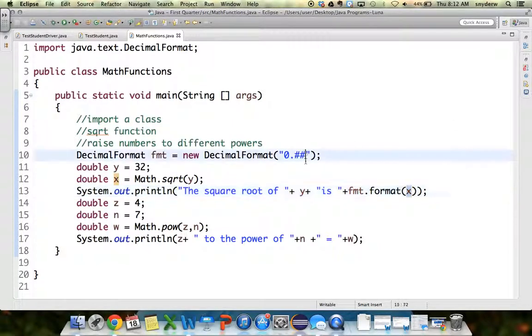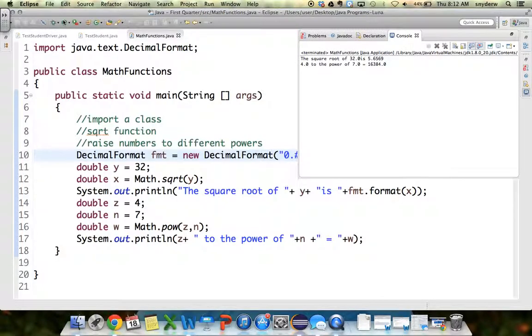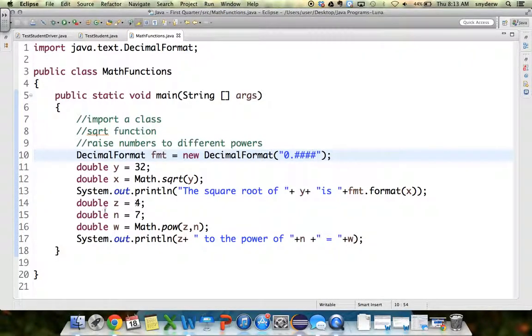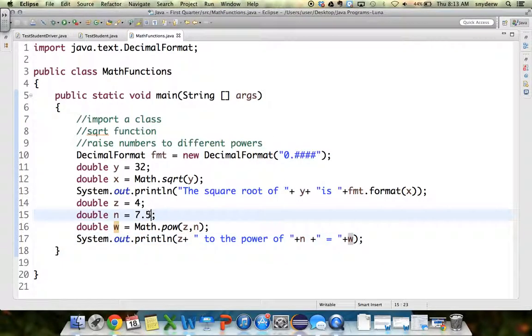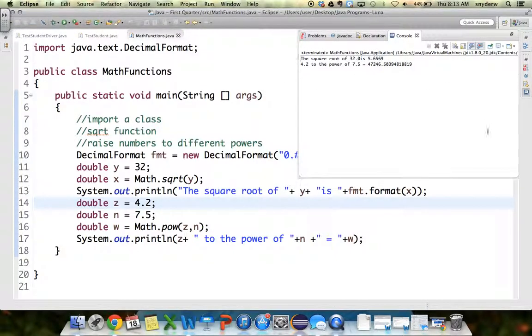If I wanted four decimal places, I put four pound signs. Four decimal places. And now I could, let's say we had z to the 7.5 power. That should make a nice ugly decimal. And if we ran that. Oh, let's pick 4.2. There. There's the ugly decimal I wanted.